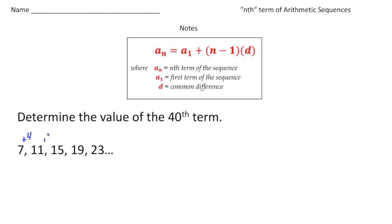So our common difference is plus 4, our first term is the 7, and we want to know what the 40th term is going to be for this one. So we're going to say the n is going to equal 40.